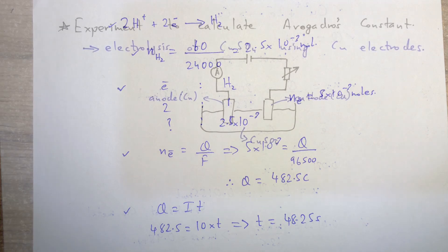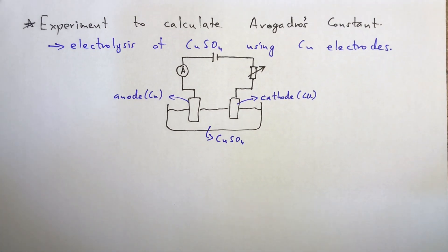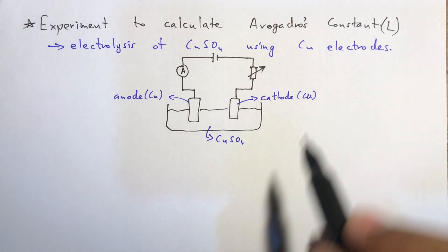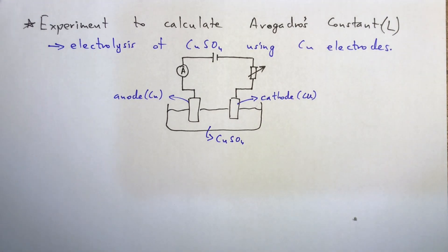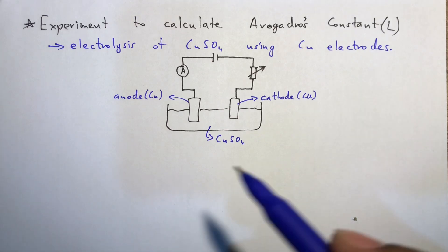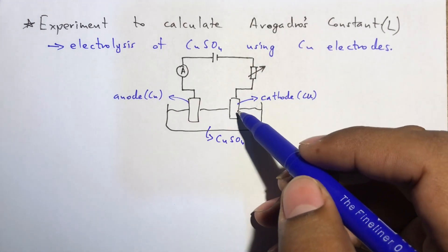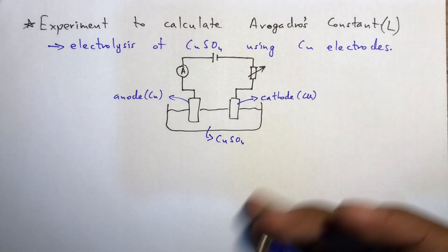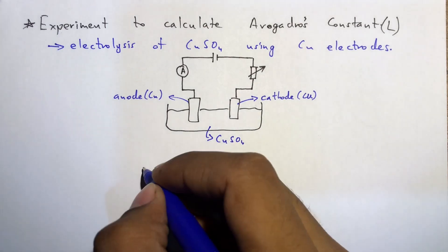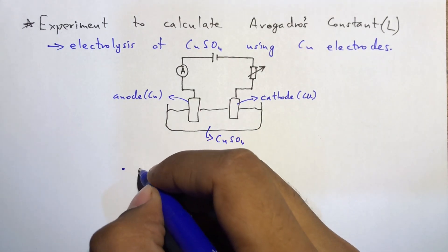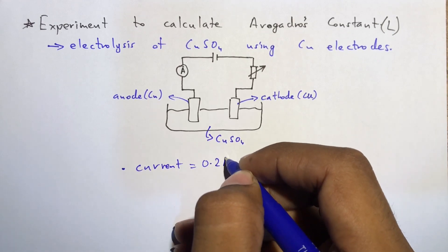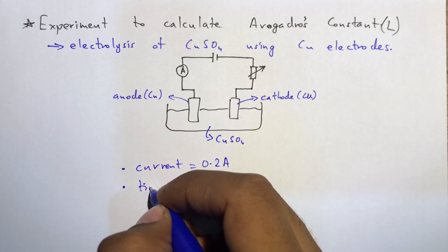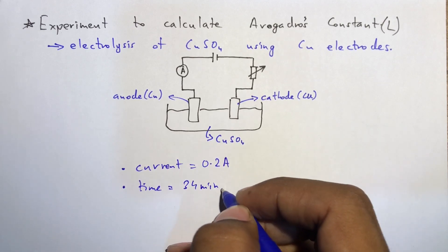Next is an experiment to calculate the value of Avogadro's constant L. For this, electrolysis of copper sulfate using copper electrodes is used. In this experiment, a current of 0.2 amperes was provided and the time was 34 minutes.